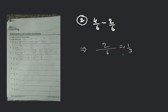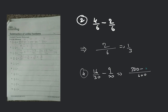What is your next question? My next question is number 4: 16 by 30 minus 9 by 20. We take the LCM — it will be 600. That will be 320 minus 270, equal to 50 by 600. That will be equal to 1 by 12.